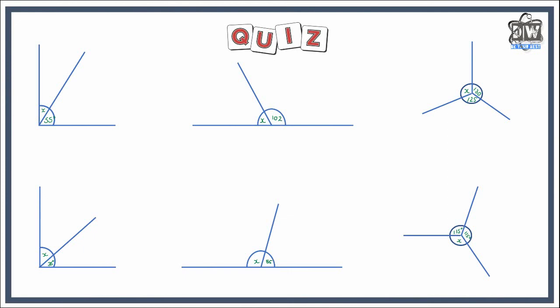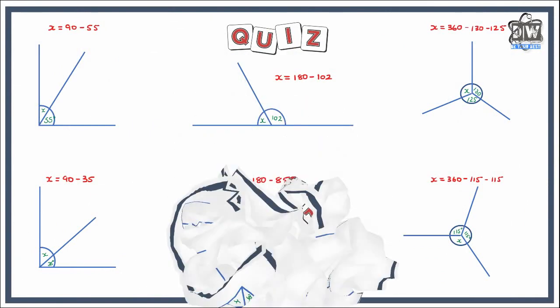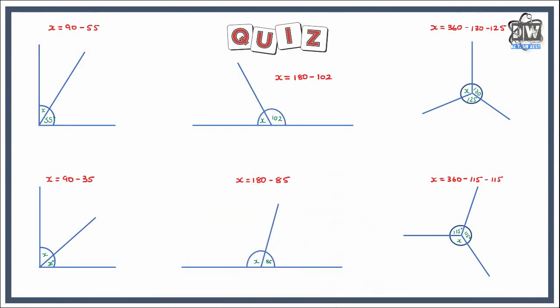All right, so here we go. It's time. We've got: 90 take away 55, 90 take away 35, 180 take away 102, 180 take away 85, 360 take away 130 and 125, and last but not least, 360 take away 115 and 115. Here are our answers: we've got 35 degrees, 55 degrees, 78 degrees, 95 degrees, 105, and 130.